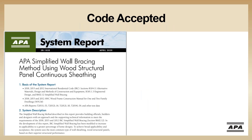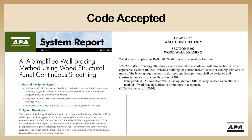Another question we get is the acceptability with code officials. There are five states that have the APA simplified method accepted and written into their code: Georgia, North Carolina, Indiana, Montana, and Idaho. An informal survey with other field services representatives found at least 10 other states that have allowed the APA simplified. In talking with code officials in South Carolina, where it's not written into the state code, they were found to be very receptive to this method.